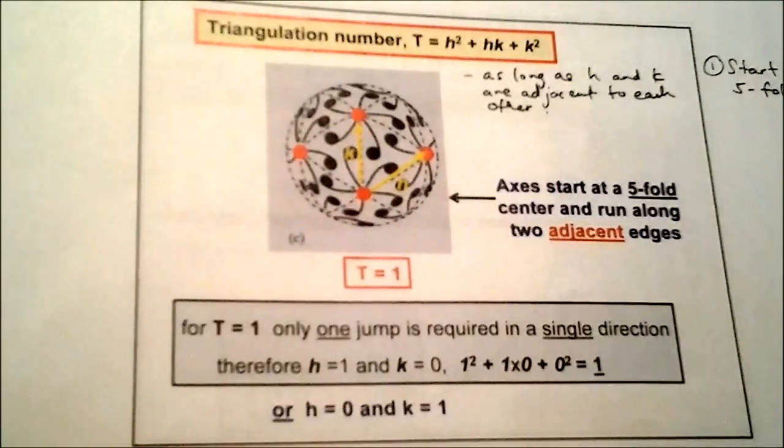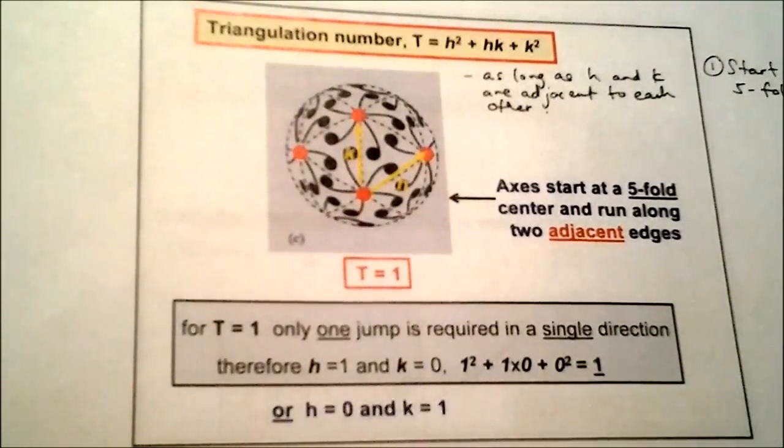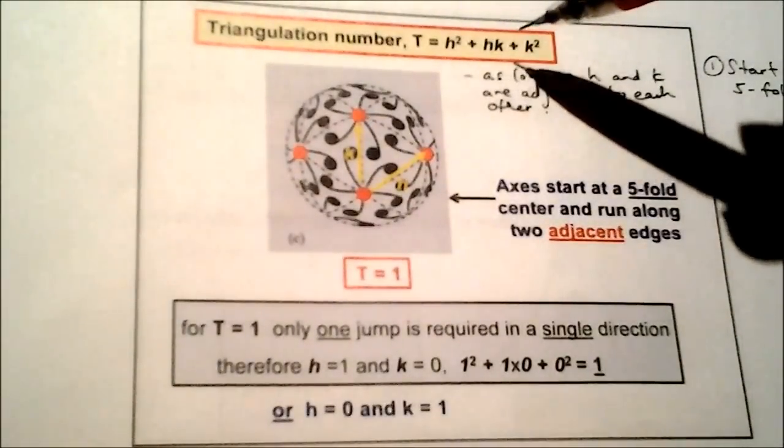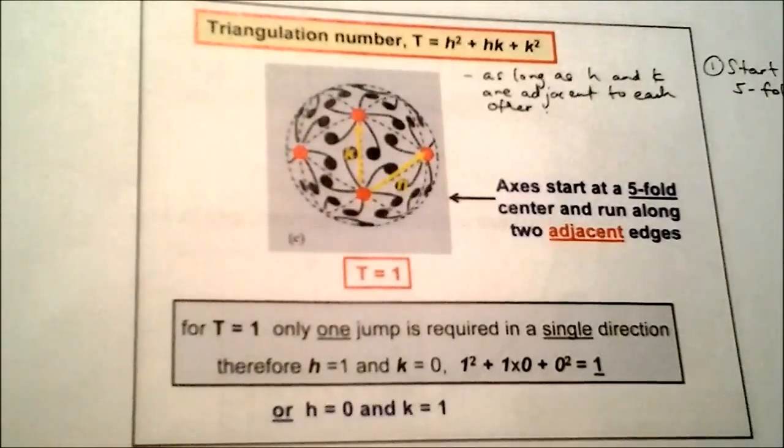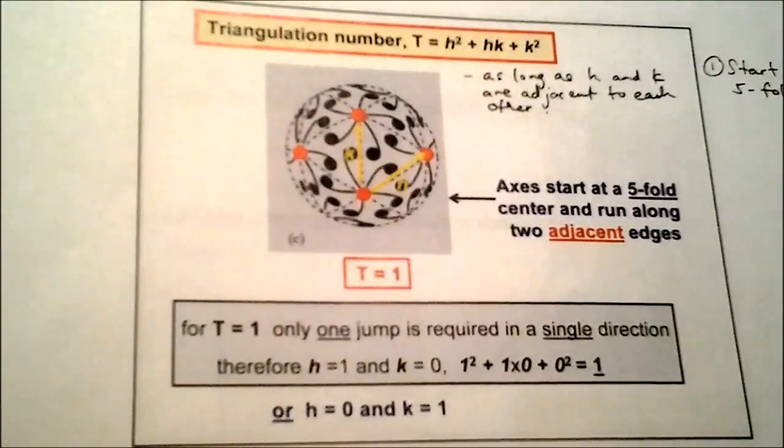As you may already know, the formula for triangulation number is T = h² + hk + k². Basically, what the triangulation number tells you is it gives you an idea of how big the viral capsid is. For example, T=3 is obviously going to be bigger than T=1.